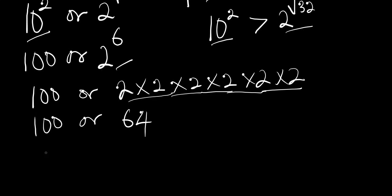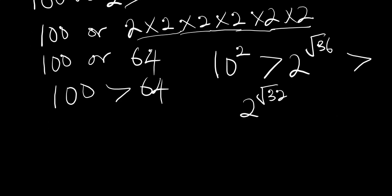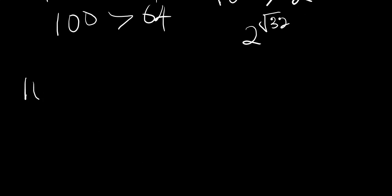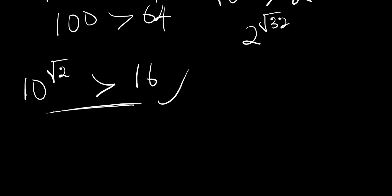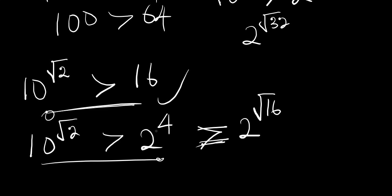It is very obvious that 100 > 64, meaning 10^2 > 2^(√36), which is also greater than 2^(√32). We can therefore clearly conclude that 10^√2 > 16. You can also write it as 10^√2 > 2^4, since 2^4 = 2^(√16) = 16. So 10^√2 is greater than 2^4, which equals 2^(√16). That is it for the video, thank you and goodbye.